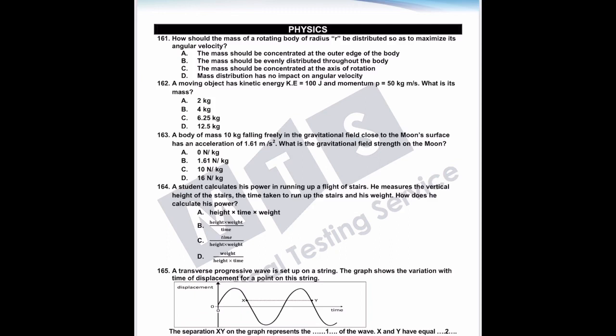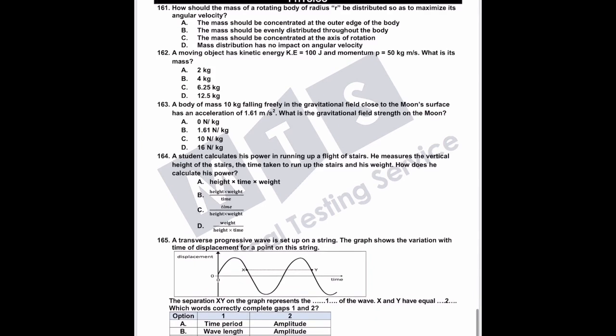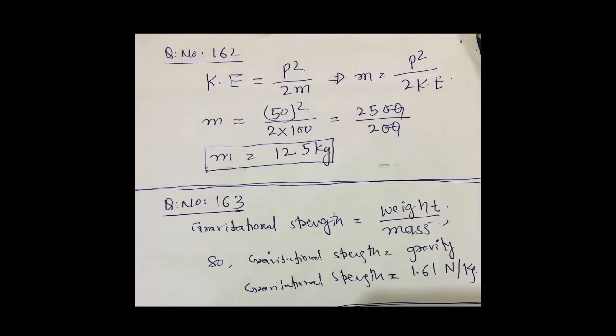Question 162: a moving object has kinetic energy of 100 joules and momentum of 50 kilogram meter per second. What is its mass? The formula is kinetic energy = p² / 2m. So mass = p² / (2 × KE) = 50² / (2 × 100) = 2500 / 200 = 12.5 kg.